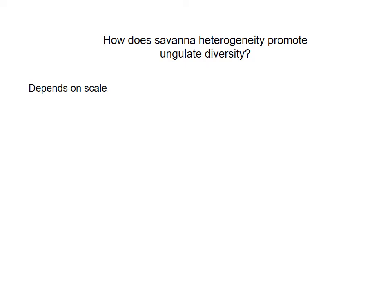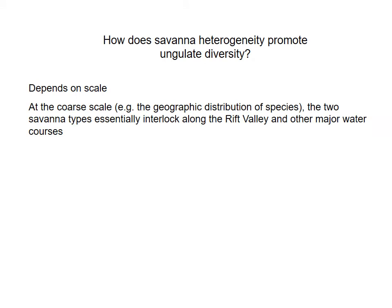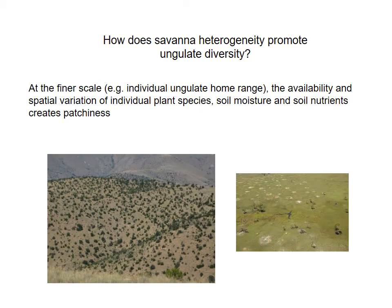Ungulate diversity depends on the scale that we're working at, and certainly everything in ecology depends on scale. At the very coarse scale — at about the geographic distribution of the species — the two major savannah types join up or interlock down the Rift Valley and other major watercourses in Africa. Whereas at the finer scale, at the individual ungulate home range, it's the availability and variation of individual plant species, soil moisture, and soil nutrients that creates the important patchiness driving increased ungulate diversity. Examples include patches of vegetation and patches of termitaria, which are known to be nutrient hotspots for ungulates in the savannah biome.